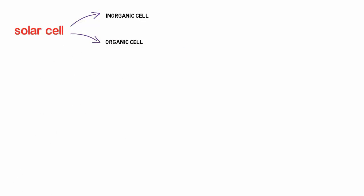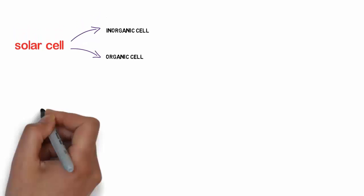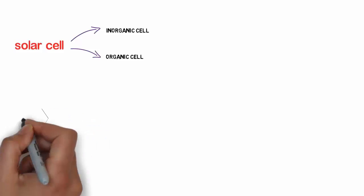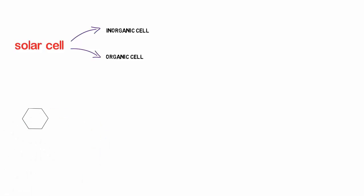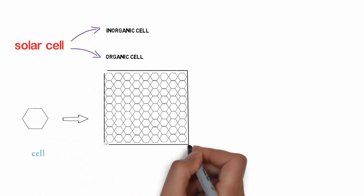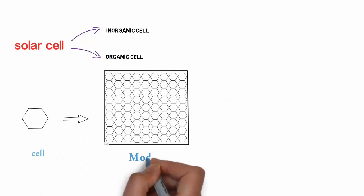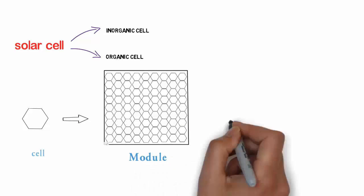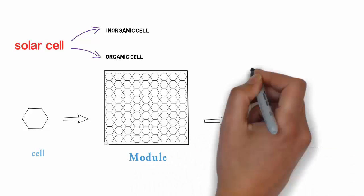If we see the physical design of a solar cell, then there is a small hexagonal unit. This is the basic unit of solar cell we call it cell. Now a number of cells are joined together to make a module, and a number of modules makes an array which are commercially available in the market.